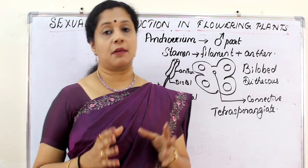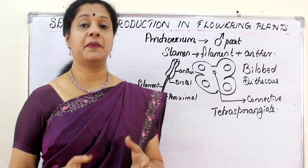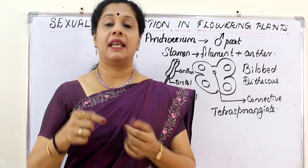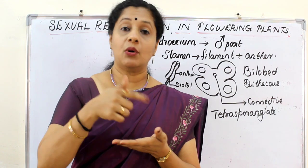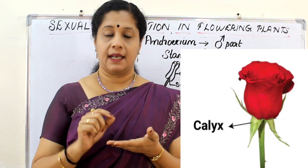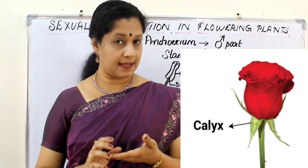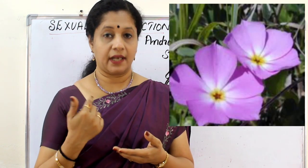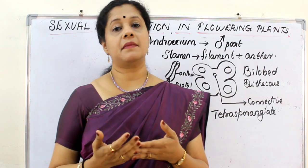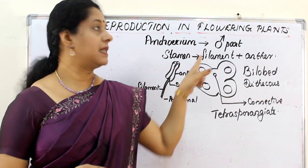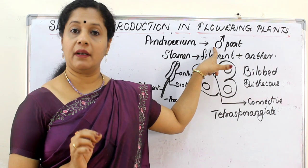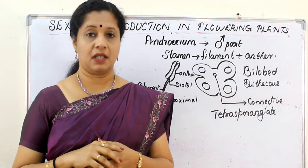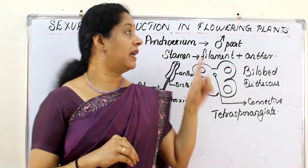The flower is the reproductive part of an angiosperm, and the flower has mainly four parts arranged in whorls — whorl means circular arrangement. The outermost whorl is called the calyx, with individual units called sepals. Inner to that comes the petals, together called the corolla. Then comes the next whorl called androecium, which is the male reproductive part. The innermost whorl is the gynoecium, which is the female reproductive part. Now we focus on androecium.